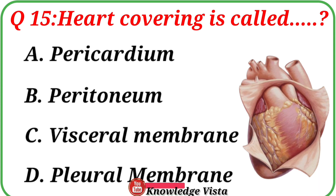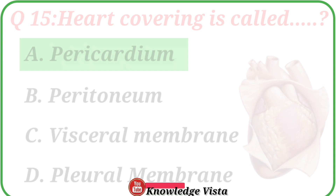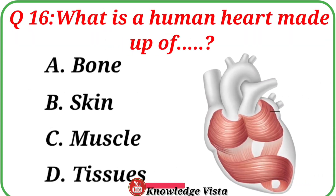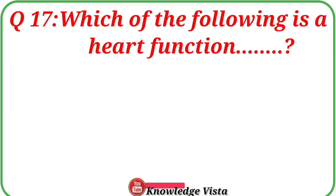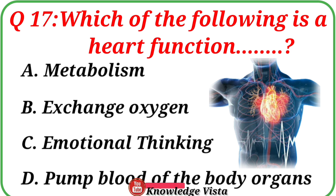Question No. 16. What is a human heart made up of? Your options are: A. Bone, B. Skin, C. Muscle, D. Tissues. Correct answer is option C: Muscle.